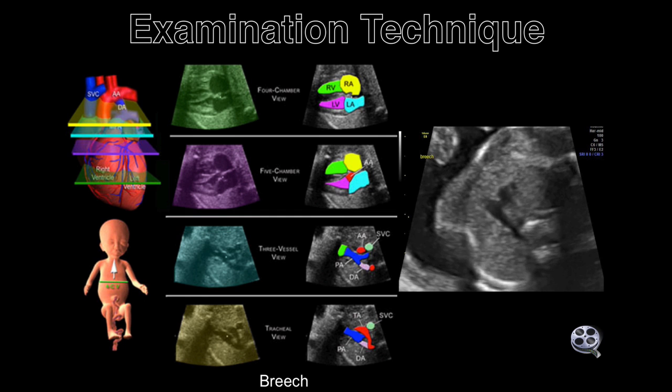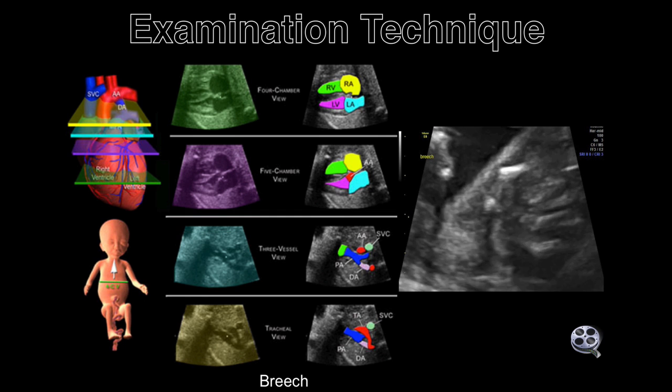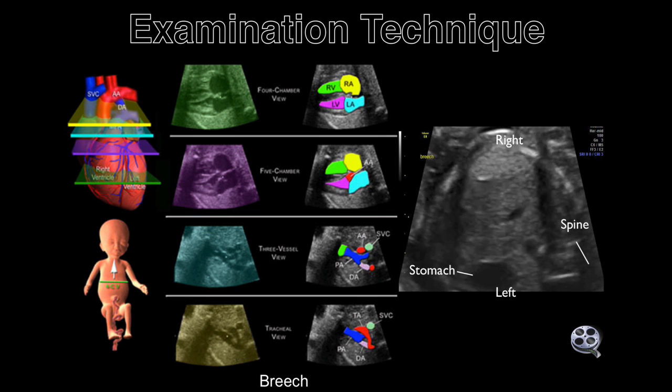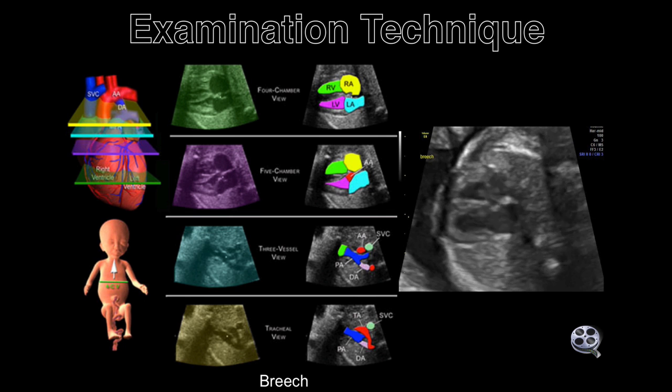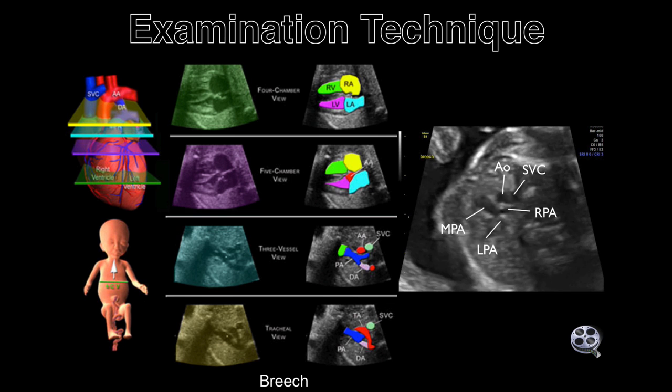2. The five-chamber view. This contains the left outflow track as it exits the left ventricle. The first portion of the ascending aorta is identified in this view.